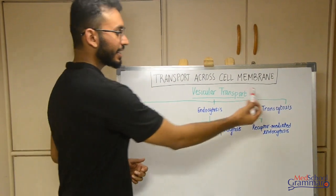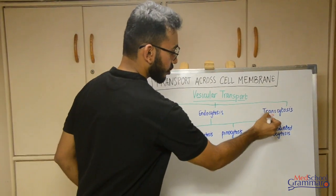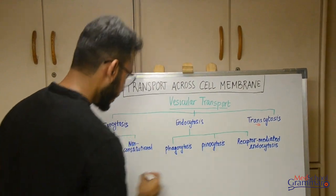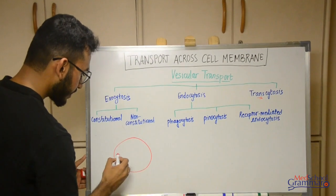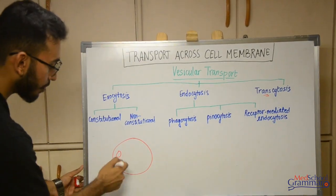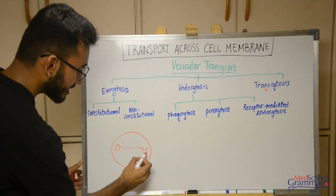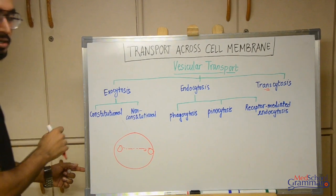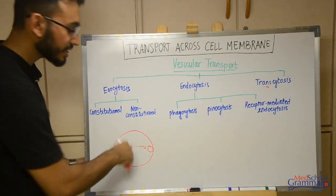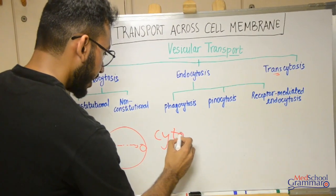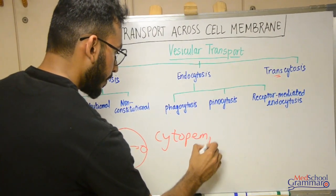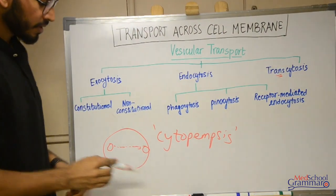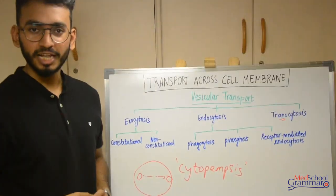Transcytosis — trans means across — refers to movement of vesicles within the cell. It involves three stages: vesicle formation, vesicular transport, and vesicular docking on its target. Transcytosis is also known as cytopempsis. That covers all three types of vesicular transport across the cell membrane.